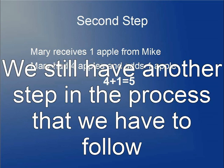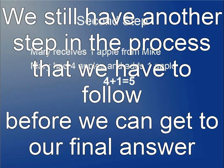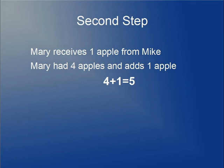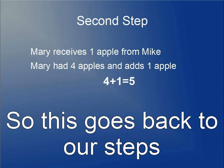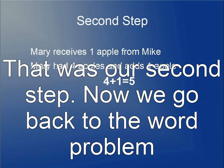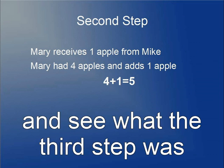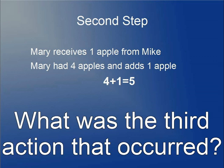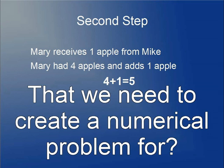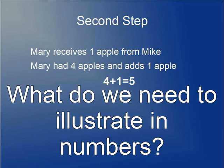But wait, we're not done. We still have another step in the process to solve before we can get to our final answer. This goes back to our steps — that was our second step. Now we go back to the word problem to see what the third step was. What was the third action that occurred that we need to represent as a numerical problem?